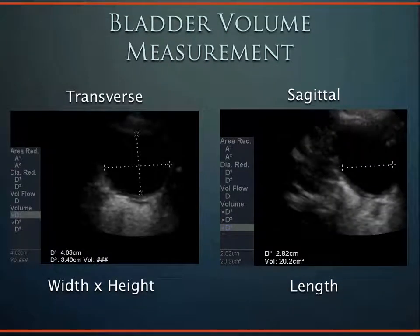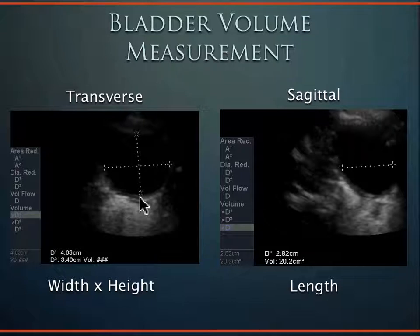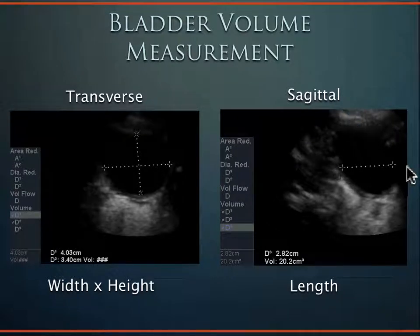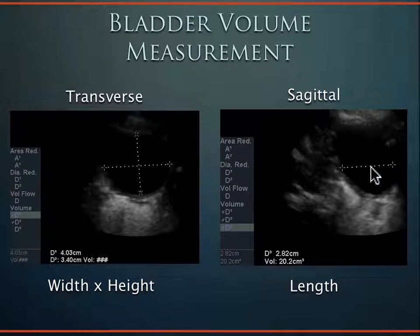You can estimate bladder volume using the equation: width times height times length. In the transverse plane, measure the width and height with calipers. Then unfreeze the machine and rotate the probe to a sagittal plane — what was the width in transverse is now the length in sagittal. In some machines you can lock in values and the machine calculates the volume automatically. Measure height in transverse, then width, then go to sagittal for length. If you followed that, you're good. If not, review the lecture again.